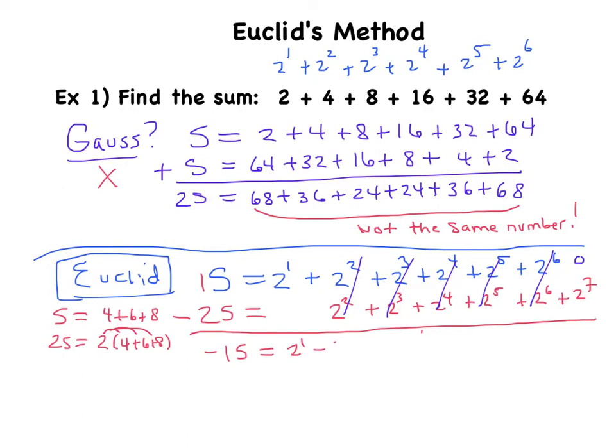Now I'm almost there. I'm just going to divide by negative 1, and I get that S equals 2 to the first minus 2 to the seventh, divided by negative 1. A pretty brilliant move on his part. We haven't turned this into a number yet, but notice that this is a rule that's going to work anytime we can express our terms as powers of one number.